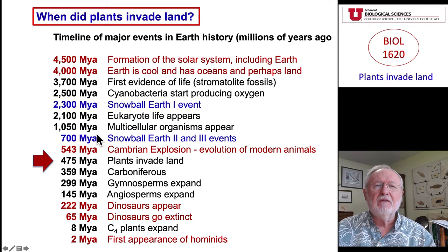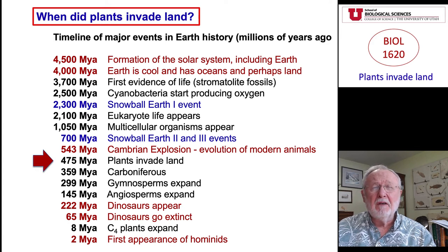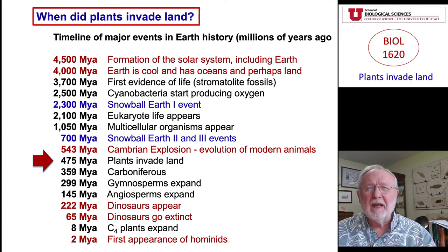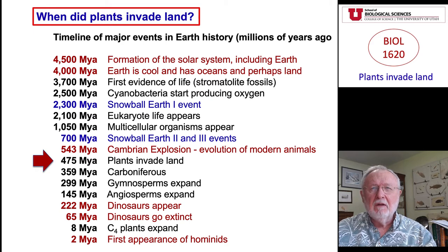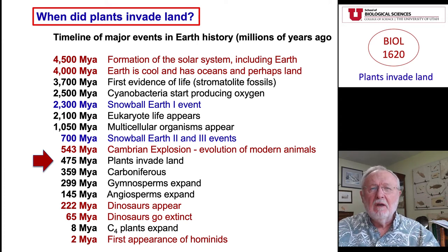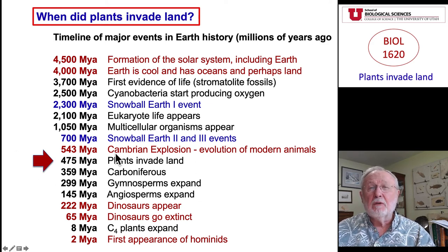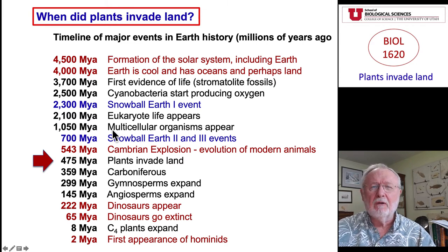To put this into a timeline perspective: we came out of Snowball Earth 2 and 3 some 660 to 700 million years ago. That was followed about 100 to 120 million years later by the Cambrian Explosion. Coming out of Snowball Earth 2 and 3, we were in the Ediacaran period — the first soft-shelled multicellular organisms. That was then followed by the Cambrian Explosion, in which we find the evolution of virtually all modern animal systems. And it's not until about 70 million years later that plants begin to invade land — long after the Cambrian Explosion and long after the end of Snowball Earth 2 and 3.